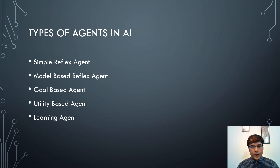Now we look at the types of agents in AI. There are five types: the first is a simple reflex agent, the second is a model-based reflex agent, the third is a goal-based agent, the fourth is a utility-based agent, and the fifth is a learning agent.